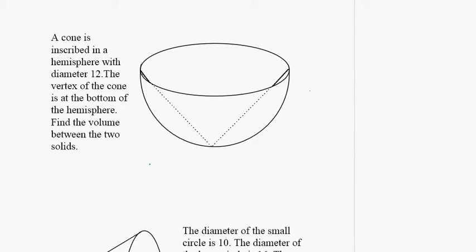A cone is inscribed in a hemisphere with diameter 12. If the diameter is 12, as many of you indicated, the radius must be 6. So this is 6. The vertex of the cone is at the bottom of the hemisphere, so this is also 6.